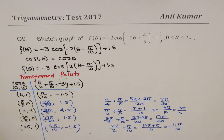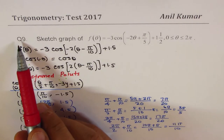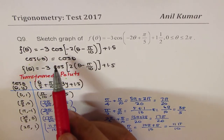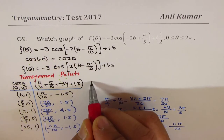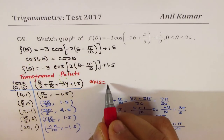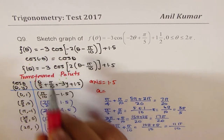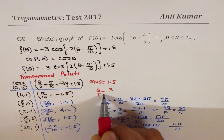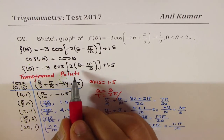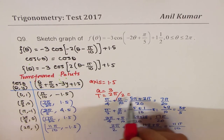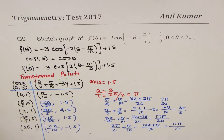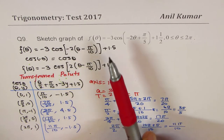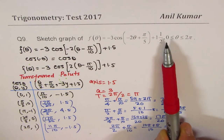Now let me show you the method I normally use — we'll go back to question number six. We start with the axis at 1.5, amplitude A = 3, and time period T = 2π/2 = π. This means we expect two cosine waves in the interval 0 to 2π.